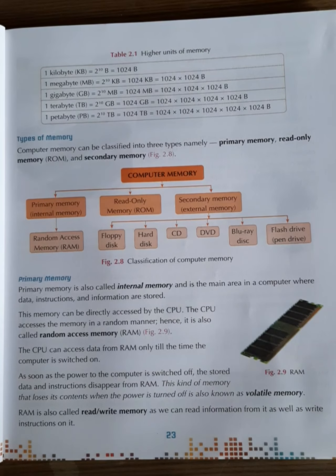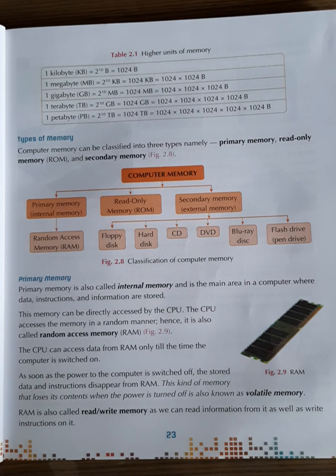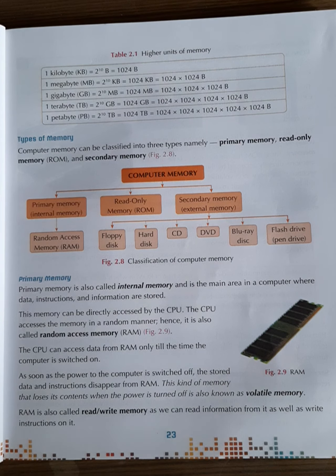Primary memory is also called internal memory and it is the main area in the computer where data, instructions, and information are stored. This memory can be directly accessed by the CPU. The CPU accesses memory in a random manner, hence it is also called Random Access Memory. The CPU can access data from RAM only while the computer is switched on. When we switch off the computer, all data on RAM is erased. RAM is called read and write memory, as we can both read from it and write to it, and also save temporary results on RAM.